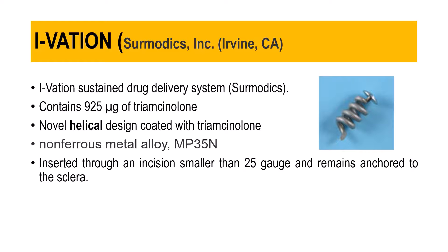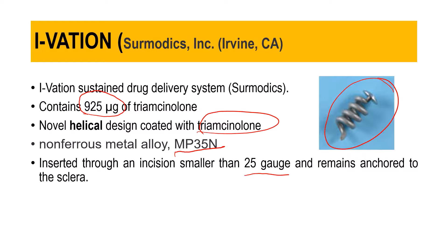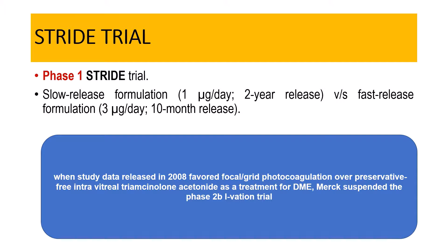iVashin is a sustained drug delivery system — a helical-shaped implant coated with triamcinolone, containing about 925 micrograms of triamcinolone. It is made of a non-ferrous metal alloy (MP35N) and is inserted through an incision smaller than 25-gauge, remaining anchored to the sclera. However, in 2008 the company carrying out the trial suspended the phase 2b iVashin trial, so this implant is not currently being used.